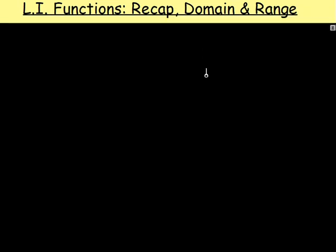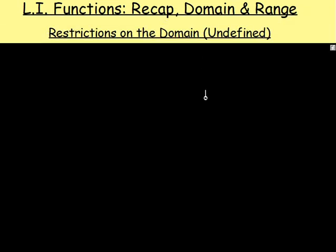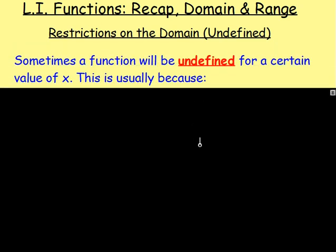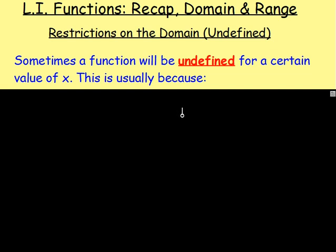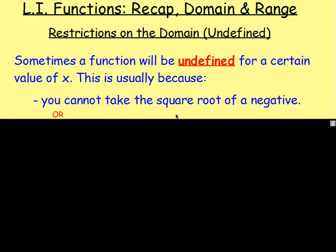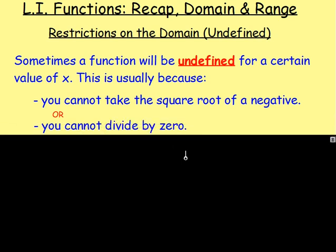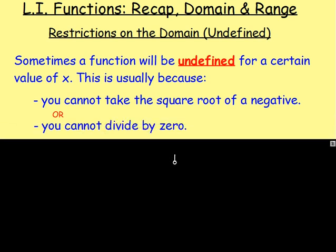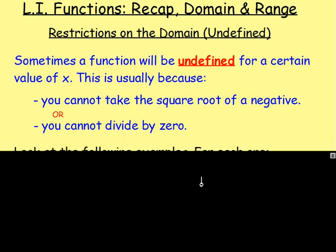One last bit I want to throw in is restrictions on the domain. Sometimes a function will be undefined for a certain value of x. This is normally because of one of two reasons: either you cannot take the square root of a negative — you might sub in a value for x and get square root of negative 5, which you can't do — or you may end up dividing by zero, which again you cannot do. Every calculator in the world explodes when you try it. Let's try a couple of examples.